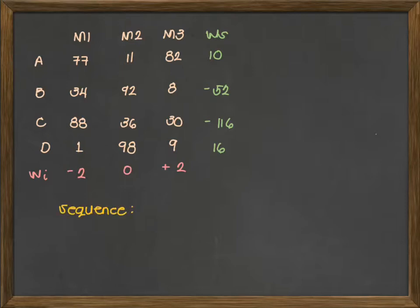We are to sequence based on the descending order of the weighted sum that we have computed. Therefore, the sequence of this job is D, A, B, and C. So this is the sequence based on Palmer's heuristics.